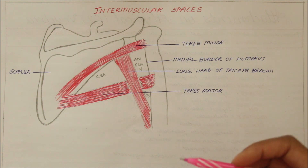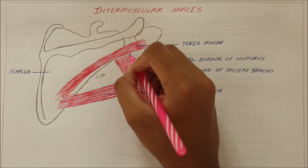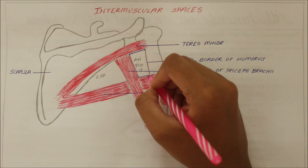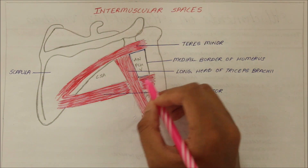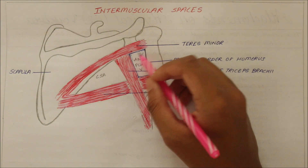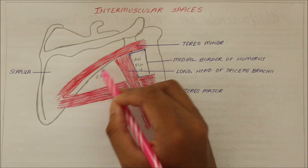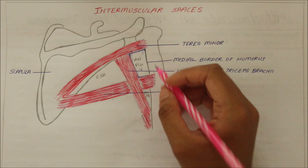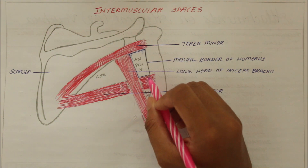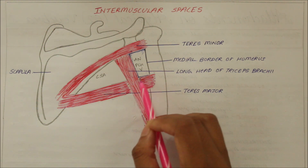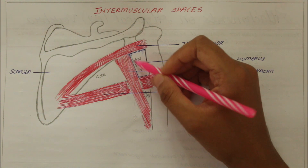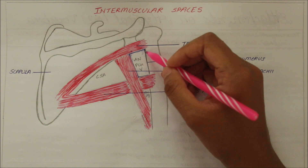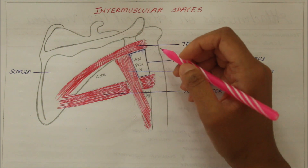Moving on to the first intermuscular space — the quadrangular space. I am outlining the quadrangular space right now. Let's discuss its boundaries. Superiorly, it is bounded by the inferior border of the teres minor muscle. Inferiorly, it is bounded by the upper border of the teres major muscle. Medially, it is bounded by the lateral border of the long head of the triceps, and laterally it is bounded by the surgical neck of the humerus.